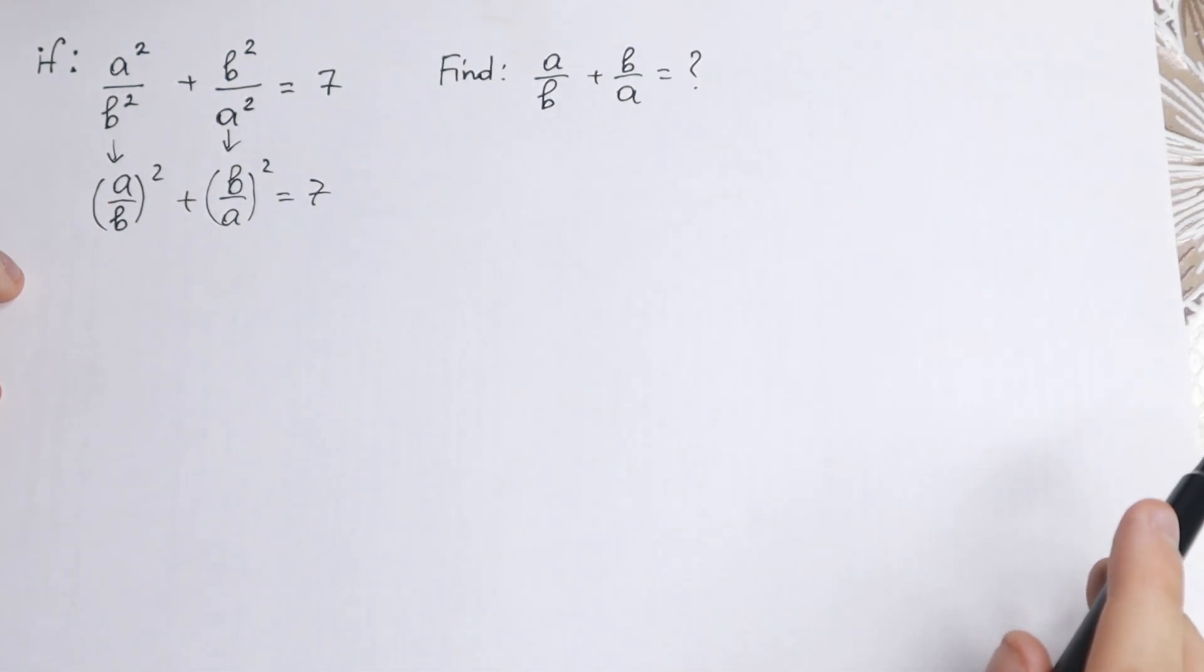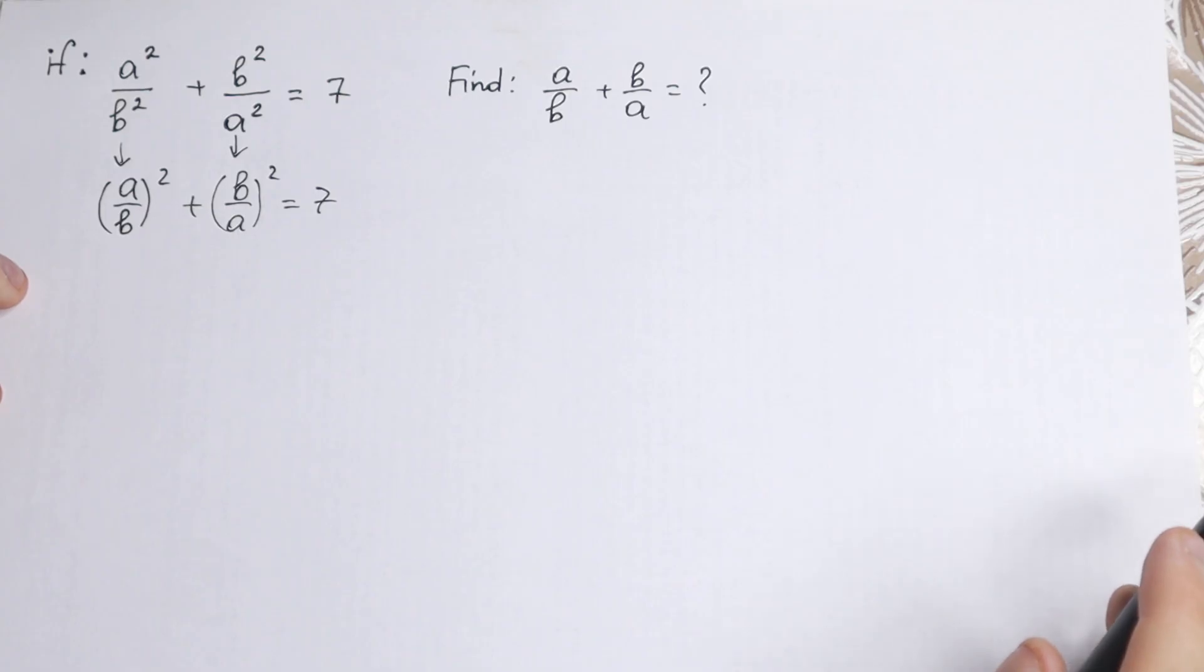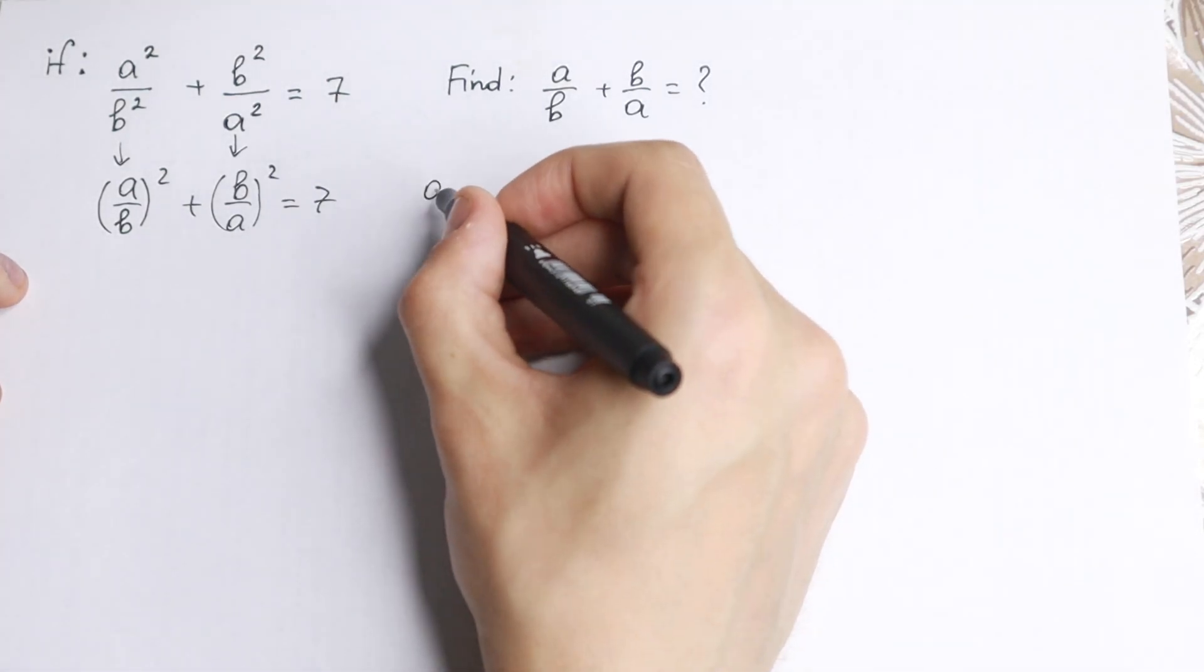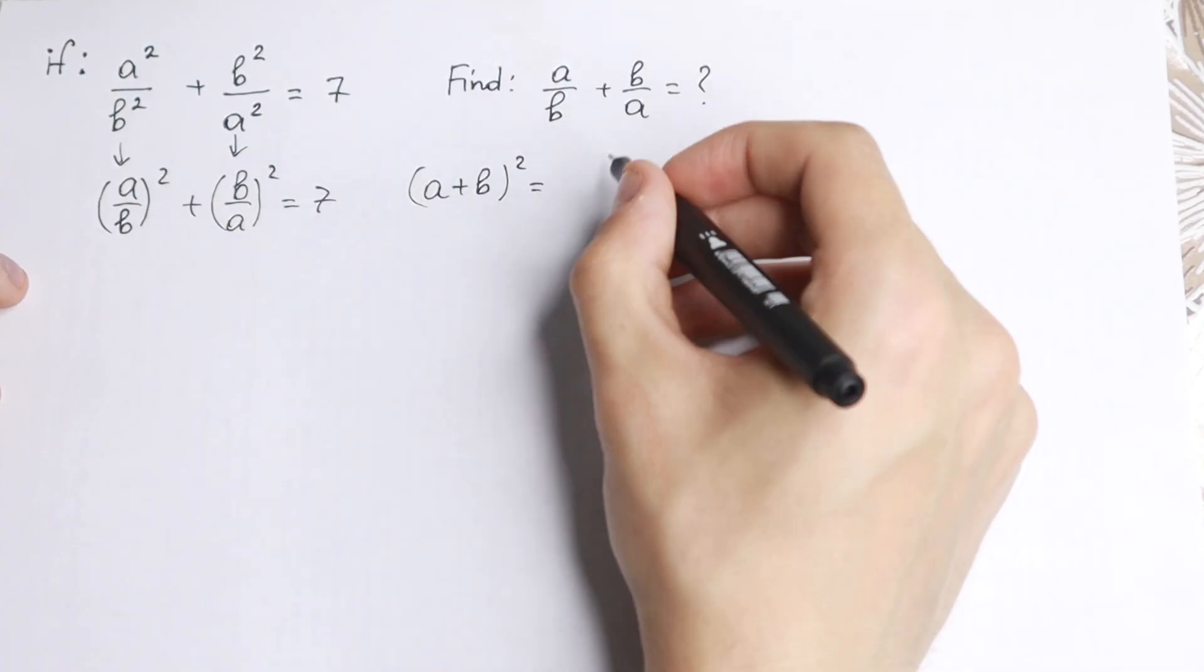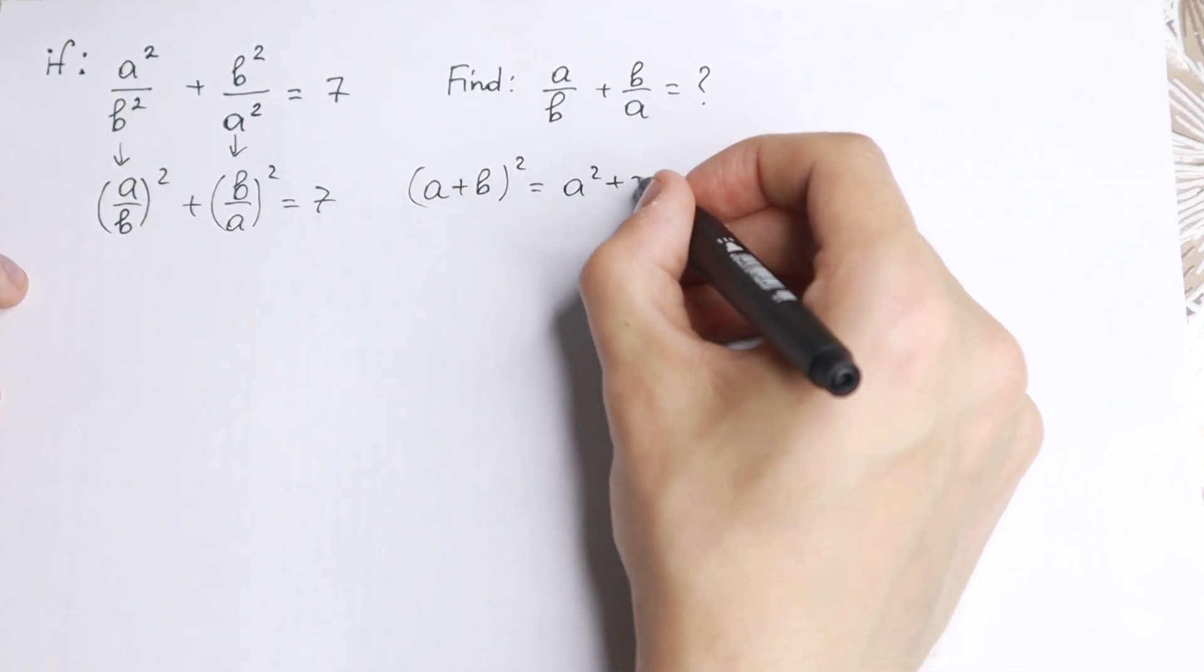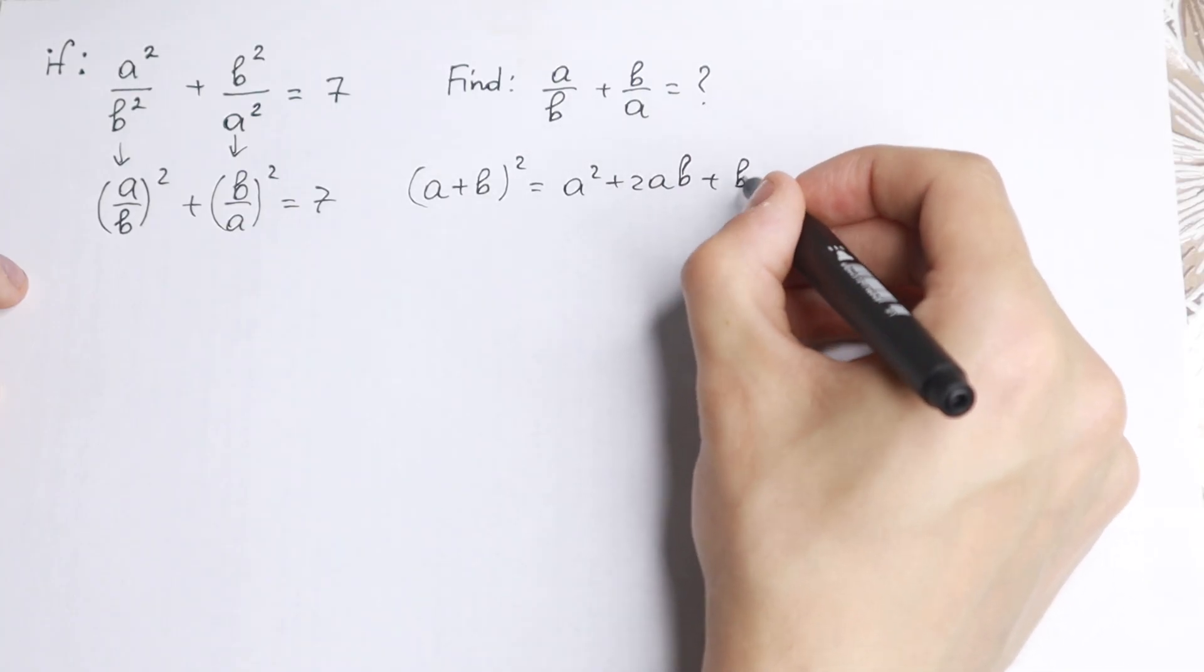Right now, the main trick: we need to know a formula. I hope you all know this formula. If you have (a + b)², it's equal to a² + 2ab + b².